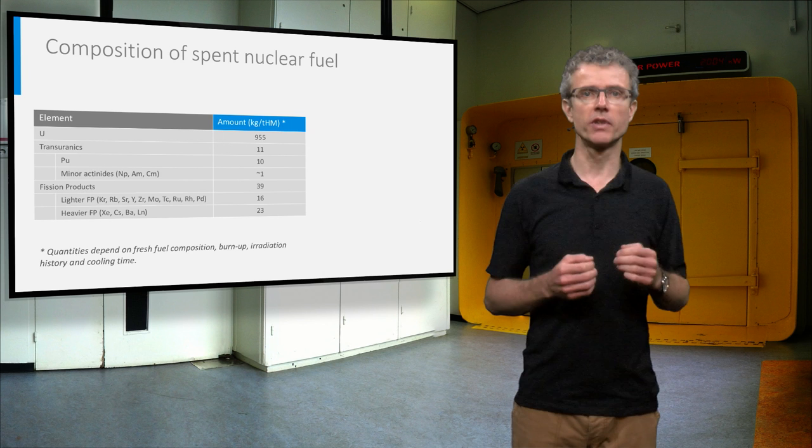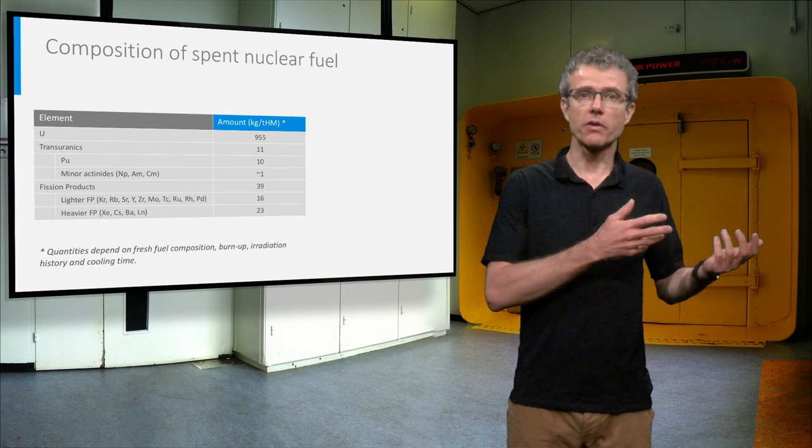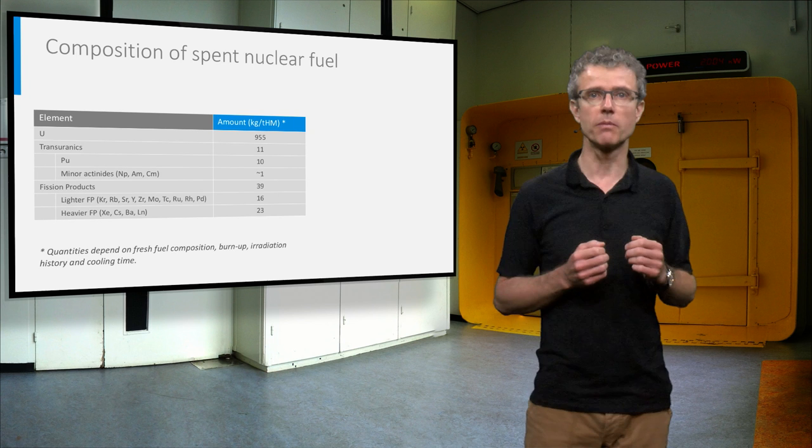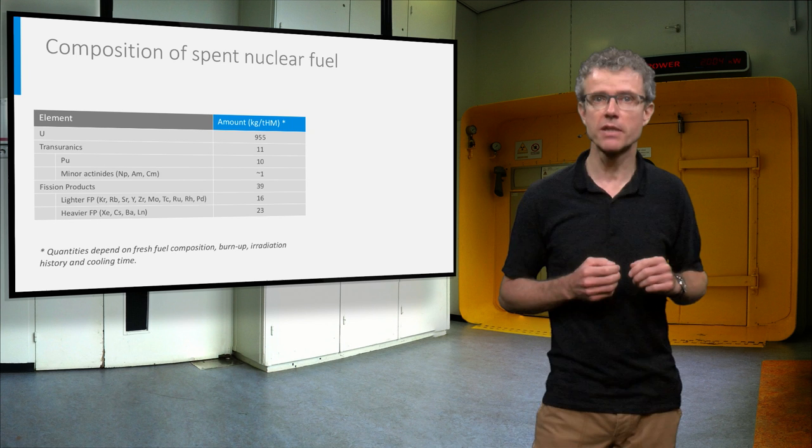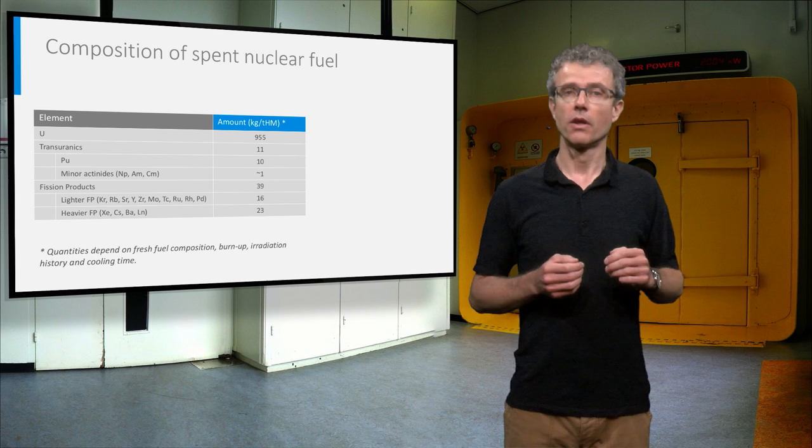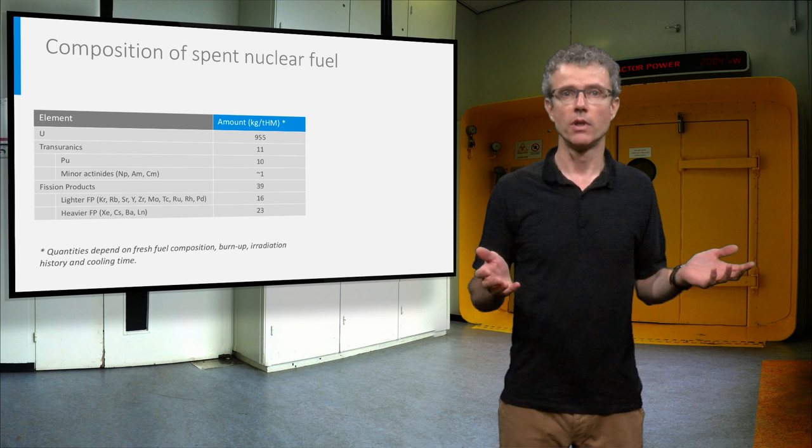Let's look again at the information about the quantities of the different constituents of a typical spent fuel. Having started with 1000 kg uranium in the fresh fuel, we have still got 950 kg uranium left in the spent fuel. Through neutron capture, 11 kg has been transformed into mainly plutonium plus some minor actinides. 39 kg fuel underwent fission, resulting in the fission products.